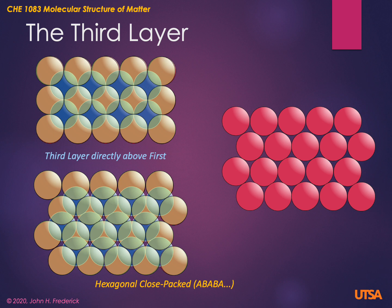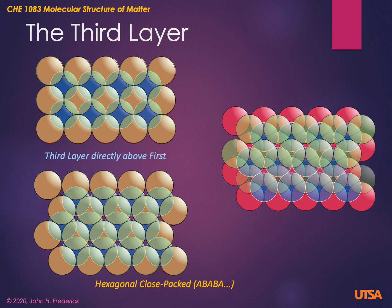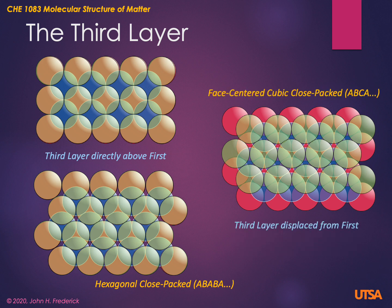That's not the only way we can do this with hexagonal layers. Instead of putting the third layer directly above the first layer, there are other holes in the second layer that we can use to stack the third layer that are not directly above it — located at shifted positions. This gives us a closest packing arrangement where all three layers are shifted relative to one another. This is called a face-centered cubic close-packed array, denoted A-B-C-A-B-C, because the next layer on top would be directly over the first layer.